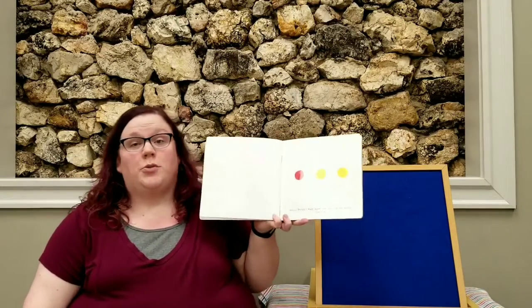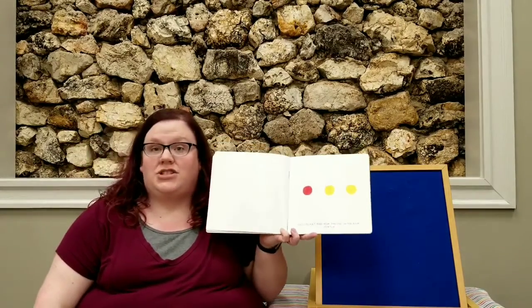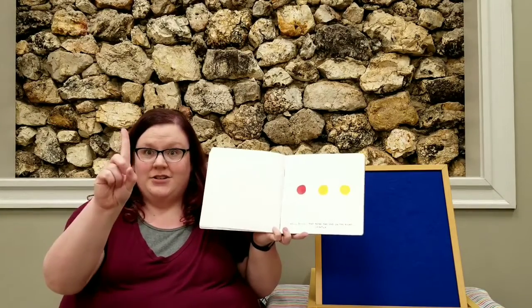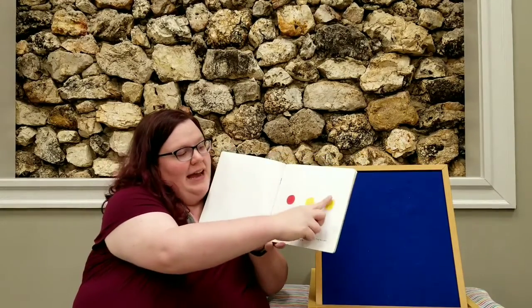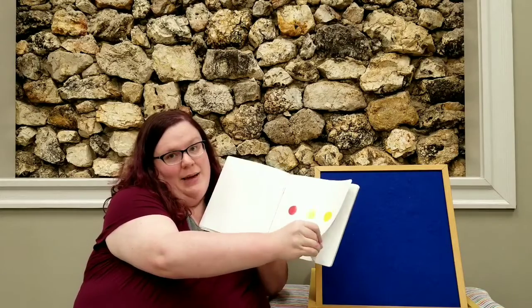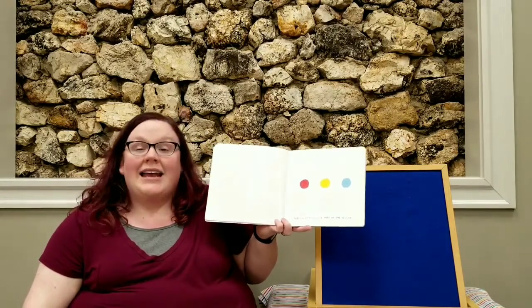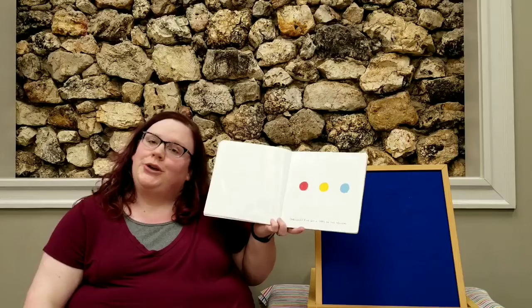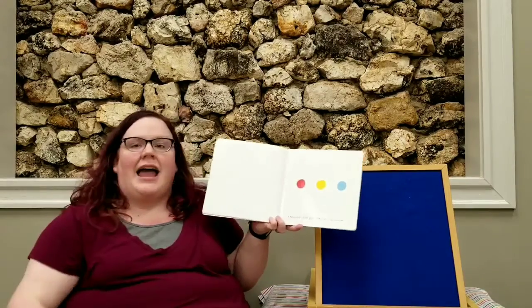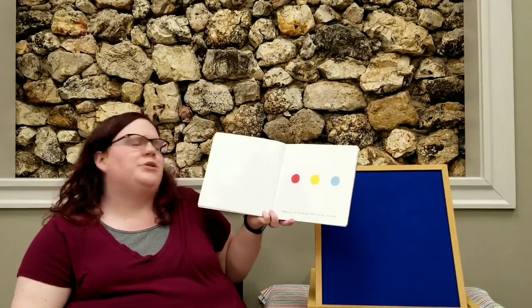Now we're gonna do the same thing to the one on the right. And we're gonna do it very gently. You ready? Fingers up! Here we go! Very gently. And what happens? It turned what color? Blue! So we have a red dot, yellow dot, and a blue dot. Fabulous!